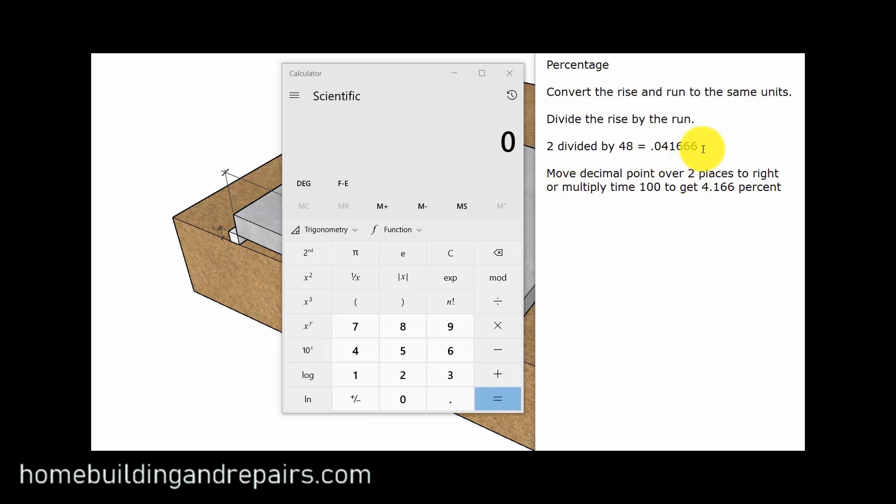Or you can simply multiply this number by 100 to get 4.166 percent. So let's go ahead and do the math on this. 2 divided into 48 equals 0.0416.